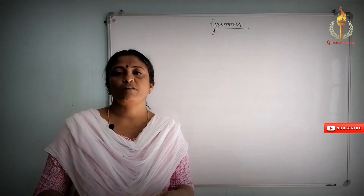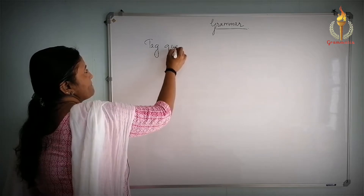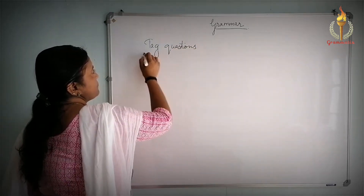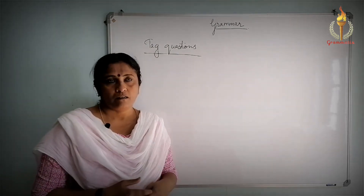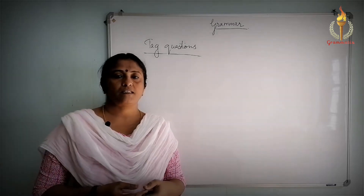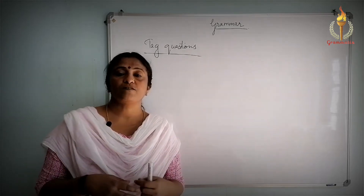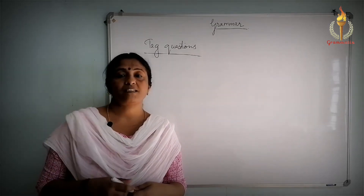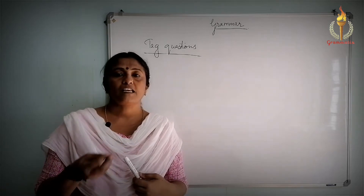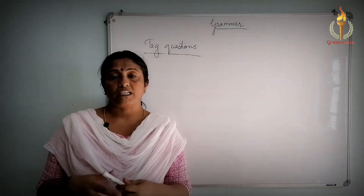Today we will be continuing with the transformation of sentences, specifically tag questions. We had studied in previous episodes about changing a declarative sentence into an interrogative sentence. A question tag is also a mode to change a declarative sentence into an interrogative sentence. A question tag is a shortened question that we put at the end of a declarative sentence to confirm something, making it an interrogative sentence.